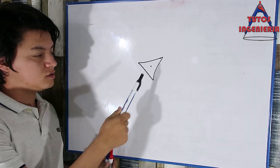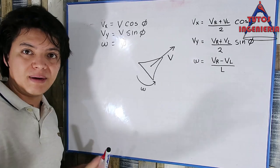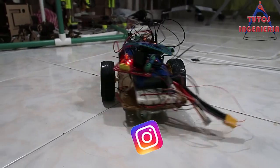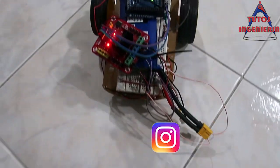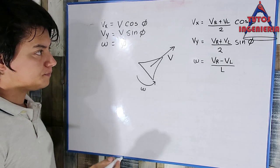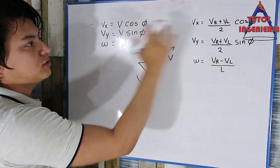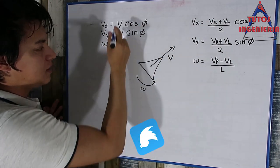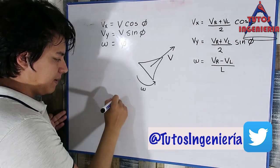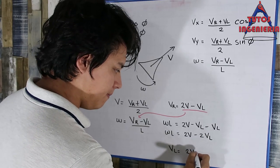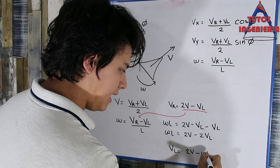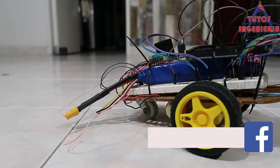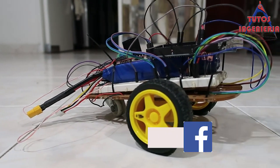Hi everybody. In the last video we developed a state-space system that relates the input and output variables. The input variables are the velocity of the wheels. In this video we are going to develop a simpler model that is easier to implement on a microcontroller. In this model, the velocity of the wheels is calculated based on a linear velocity and an angular velocity.